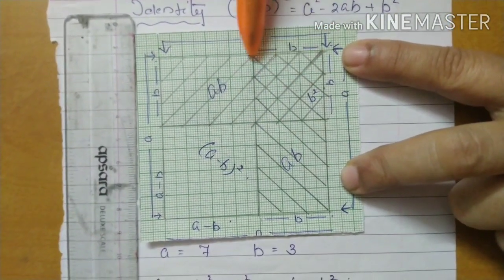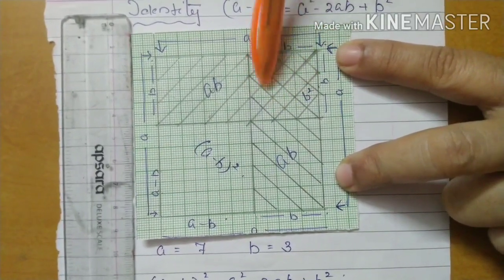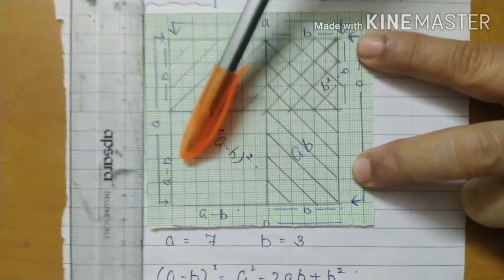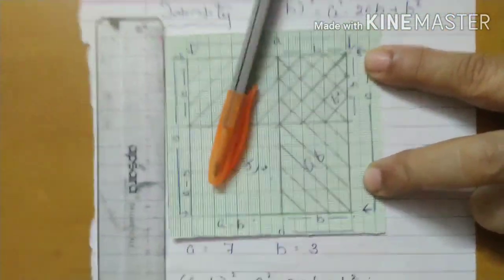Here B square is coming. This is B and this also B, so this part is B square. And this part is not coming, this is blank. Here it is not shaded, so the shaded part is not coming here.